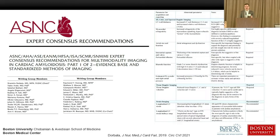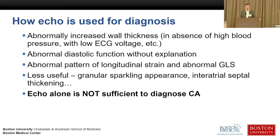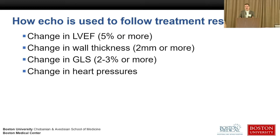There are guidelines convened by Dr. Dorbala at the Brigham and Dr. Bork at University of Virginia that standardize how to report these measurements. Echo alone is helpful but not sufficient to diagnose cardiac amyloidosis alone. Generally, a change in EF of more than 5% is considered significant, a change in wall thickness of more than 2 millimeters is significant, and a change in strain of more than 2–3% is significant. Echo is also really useful for assessing heart pressure change.